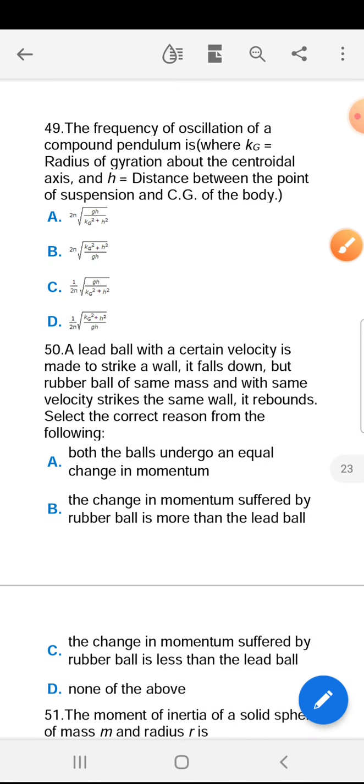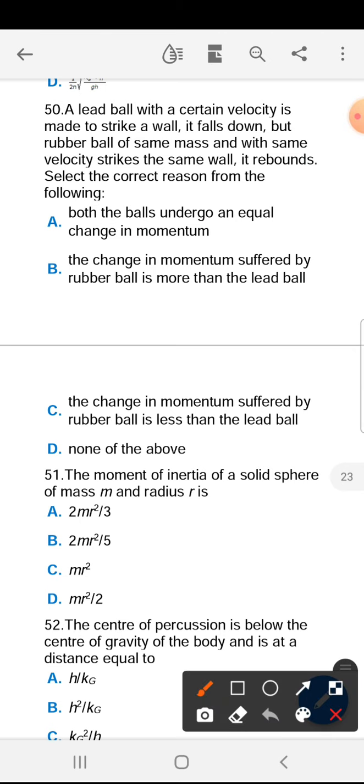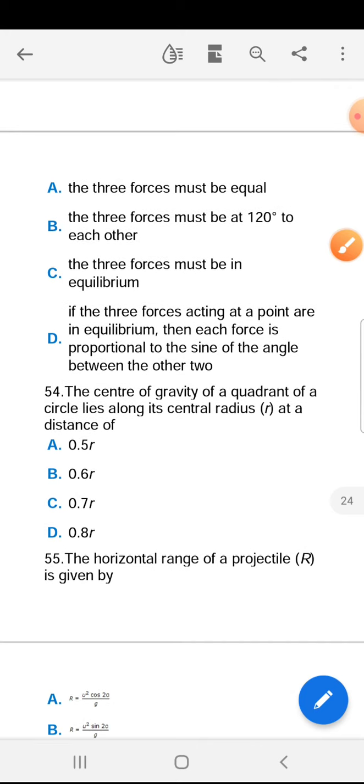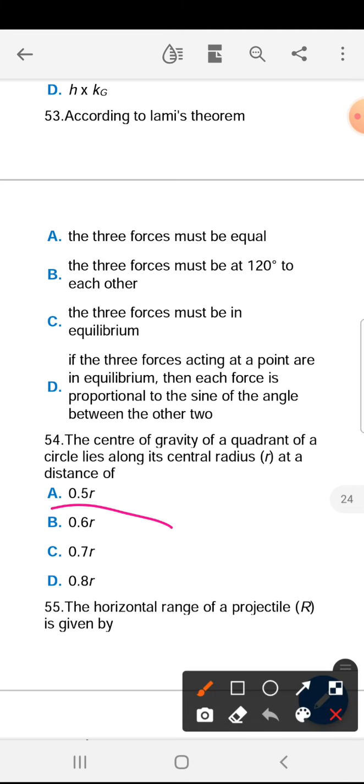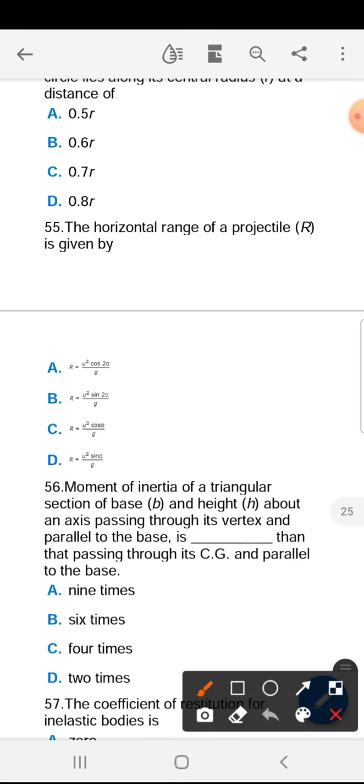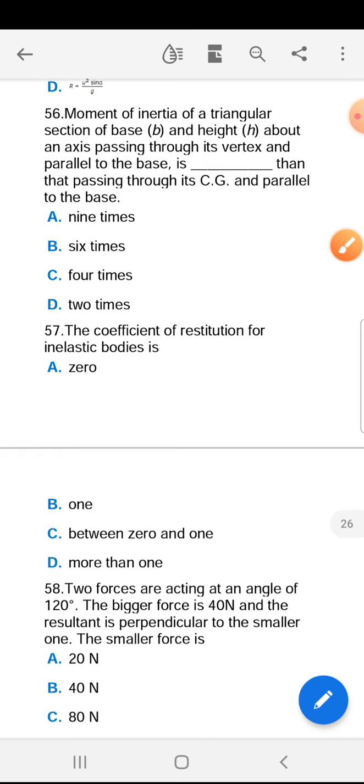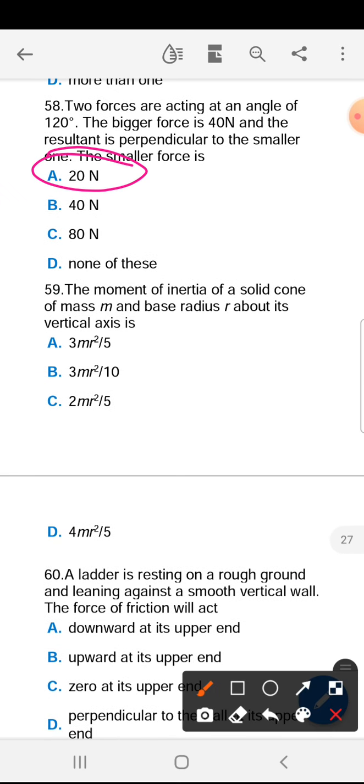Forty-ninth is A. Fiftieth is B. Fifty-first is B. Fifty-second is C. Fifty-third is A, Lame's theorem only. Fifty-fourth is B. Fifty-fifth is B. Fifty-sixth is A. Fifty-seventh is A. Fifty-eighth is A. Fifty-ninth is B.